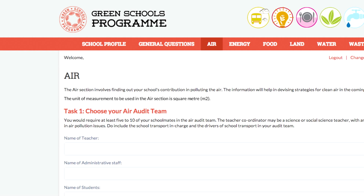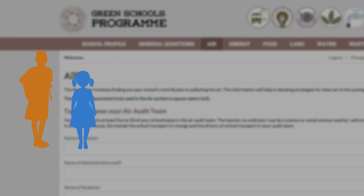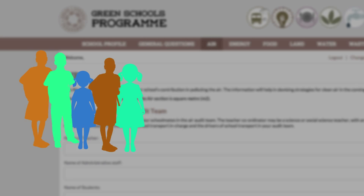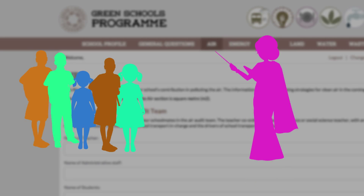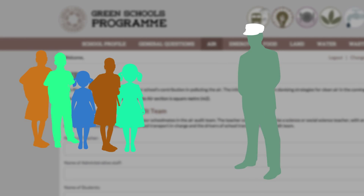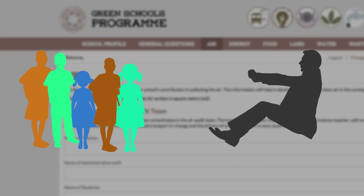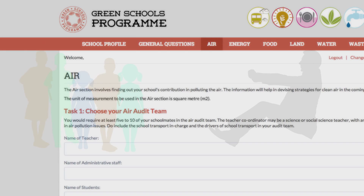Let's come to Task 1. We need to first create a team of 5 to 10 students plus administrative staff who would help the AIR audit team. The teacher coordinator may be a science or a social science teacher. The school transport in charge, if your school has one, and the drivers of school vehicles can also be included in the AIR audit team.